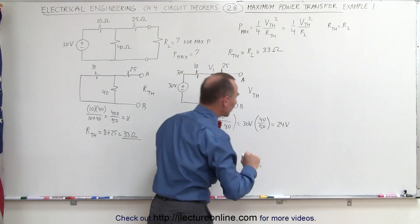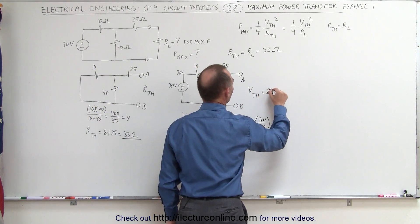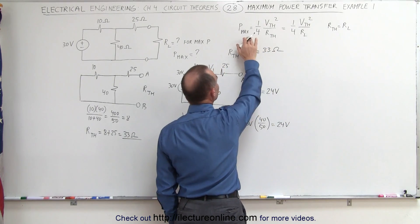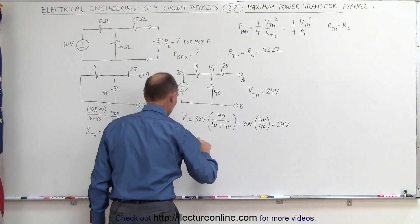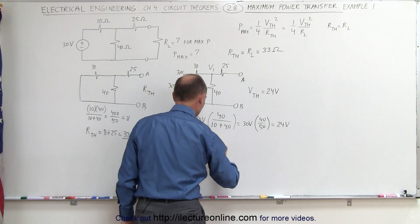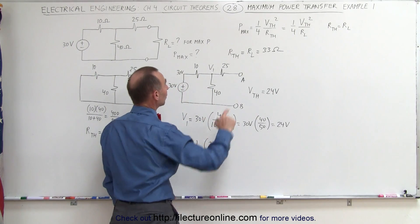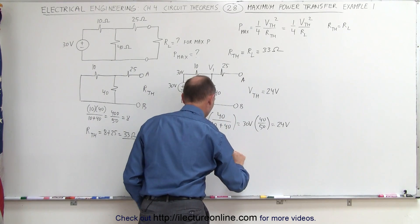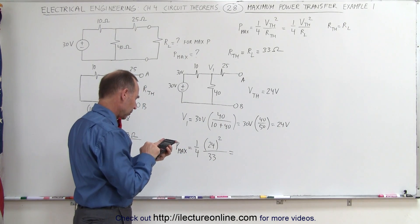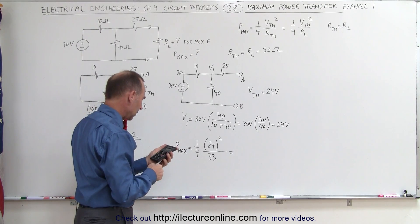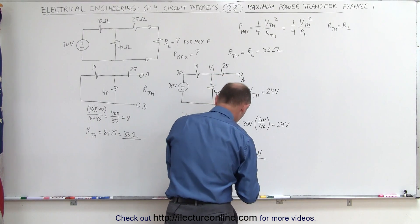That's 80% of 30 volts, which gives us 24 volts — that's the Thevenin equivalent voltage. Now we can calculate the maximum power transfer: P-max equals one-quarter times the Thevenin voltage squared, which is 24 volts squared, divided by R-sub-L, which equals R-Thevenin at 33 ohms. That works out to 24 squared divided by 4, divided by 33, giving us 4.36 watts as the maximum power transfer.